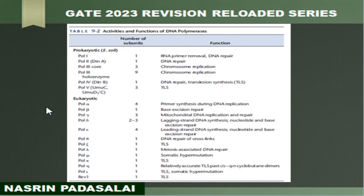POL-4 is involved in DNA repair and also in translesion synthesis. POL-5 is also involved in translesion DNA synthesis. The number of subunits for the core enzyme of DNA POL-3 is 3; the number of subunits for the holoenzyme of DNA polymerase 3 is 9; and the number of subunits for DNA polymerase 5 is 3.